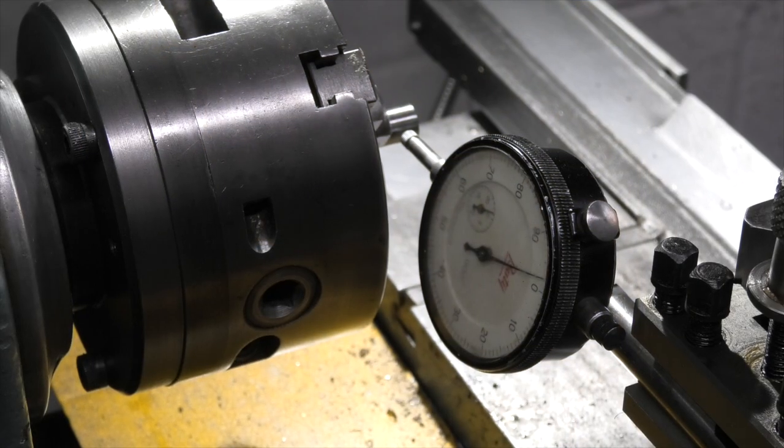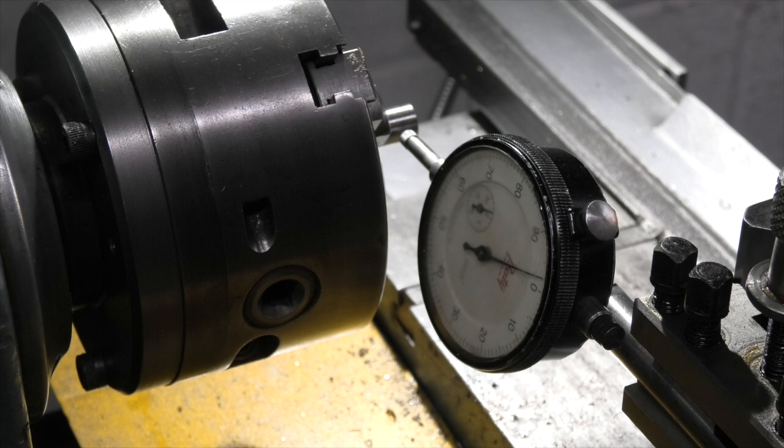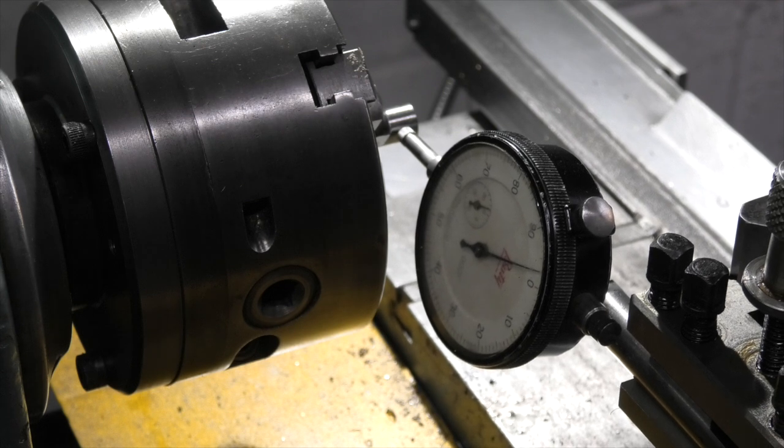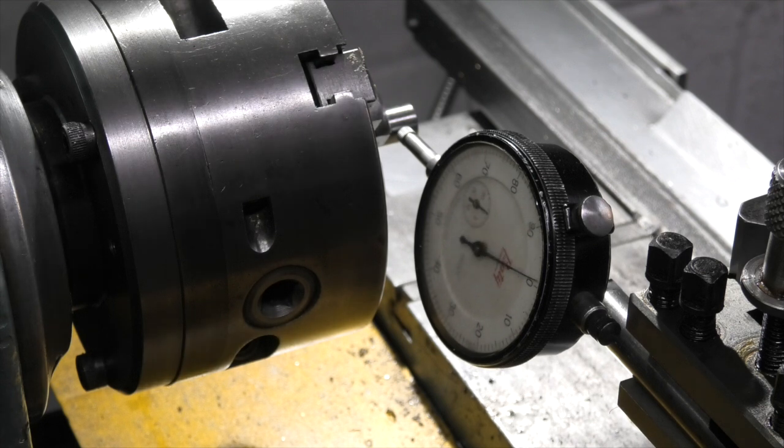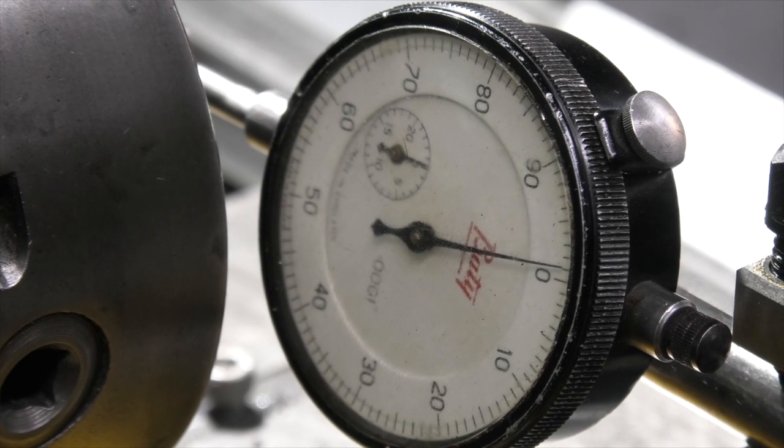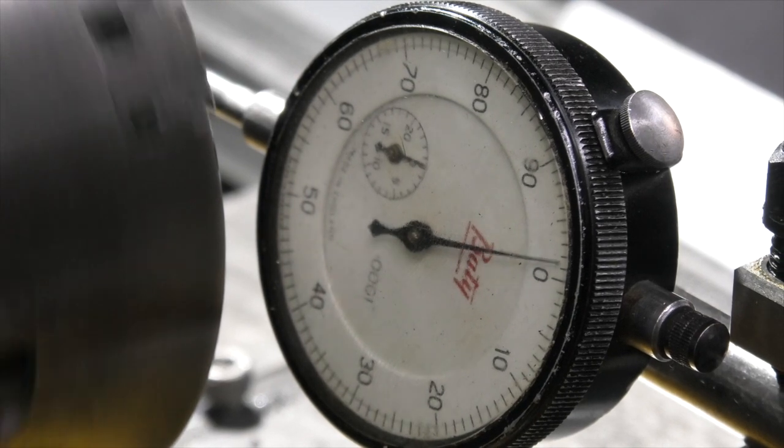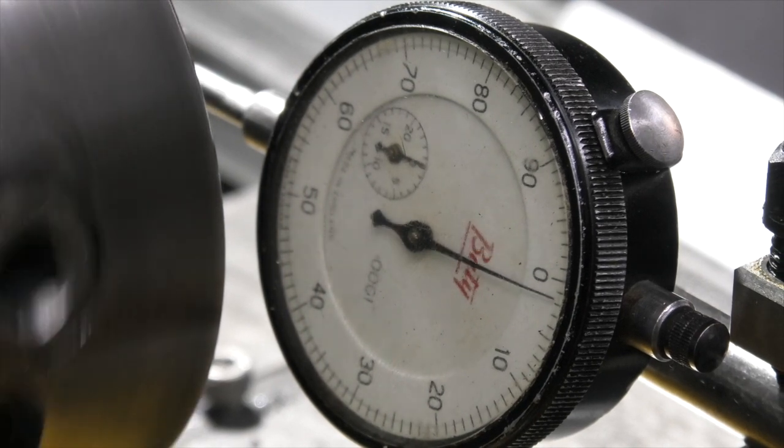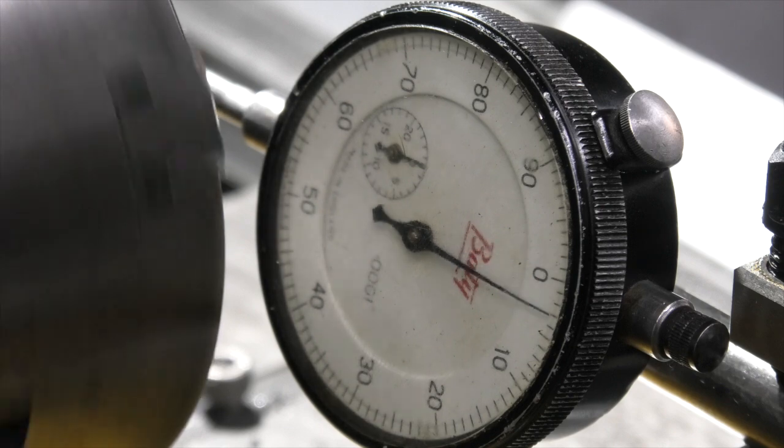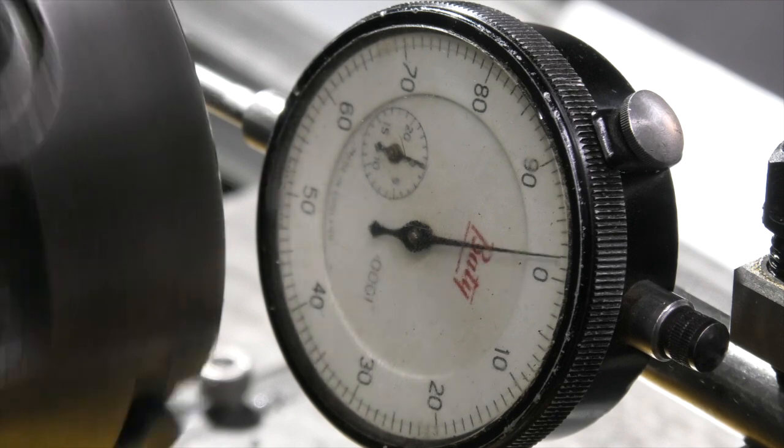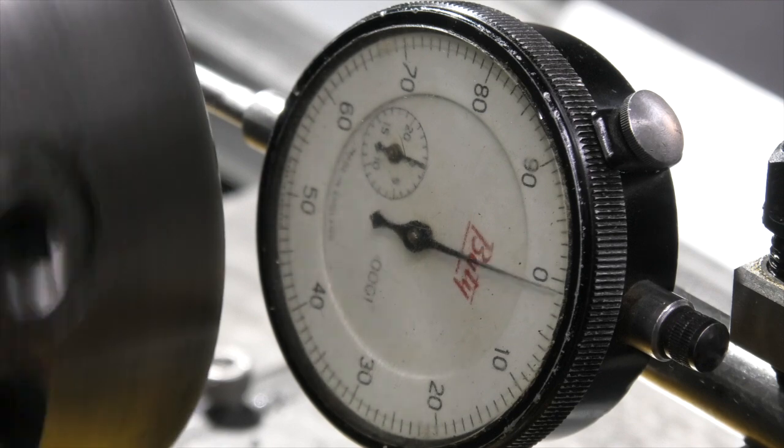I've just placed the dial indicator in my tool post. Bring that up to touch the part. Switch that on. Turn around slowly. And you can see there it's running out about half a thou. Each division is a tenth of a thou.